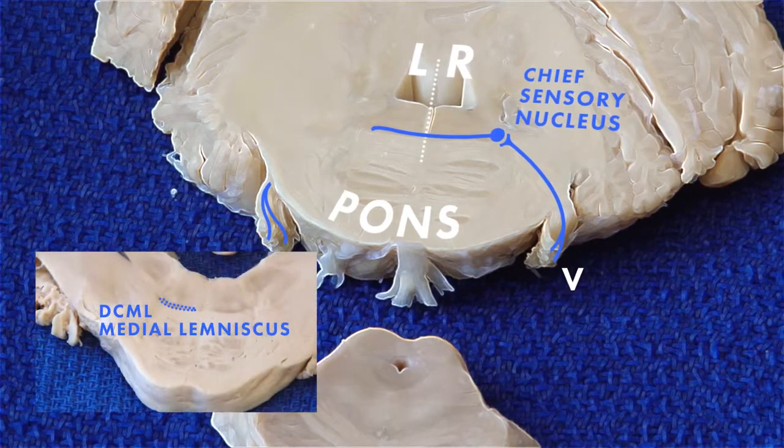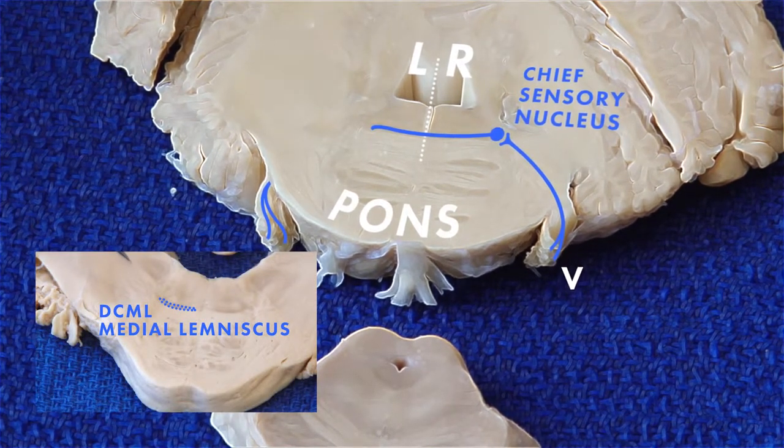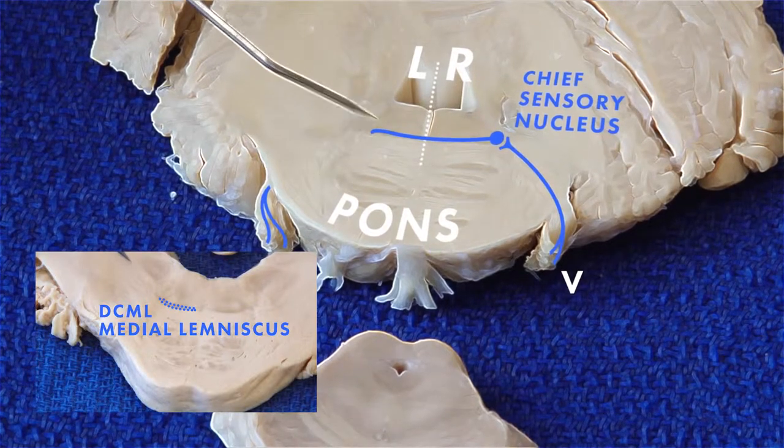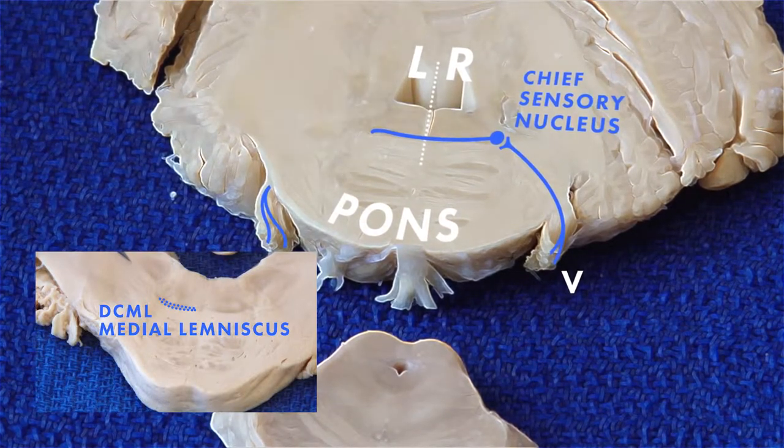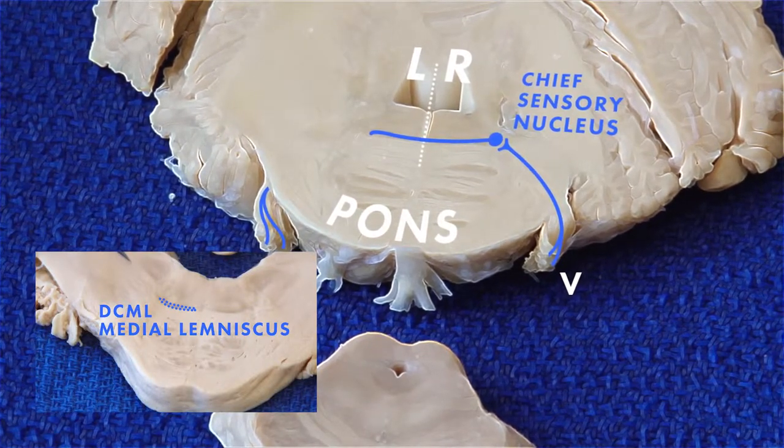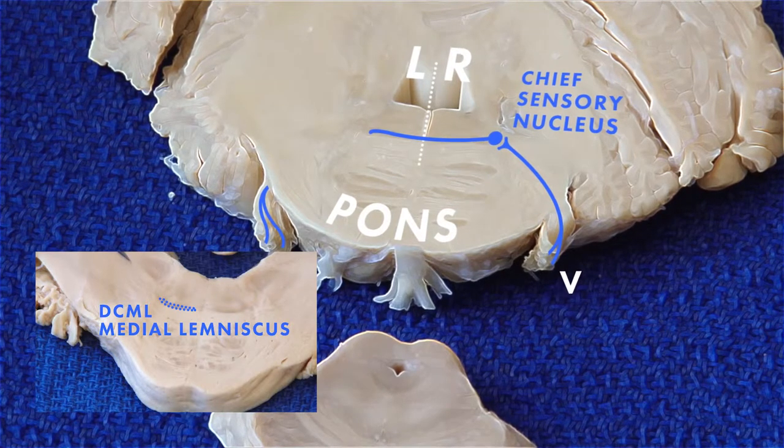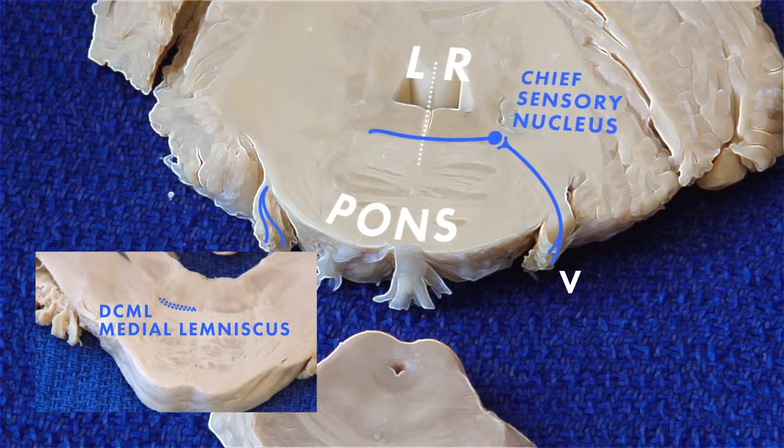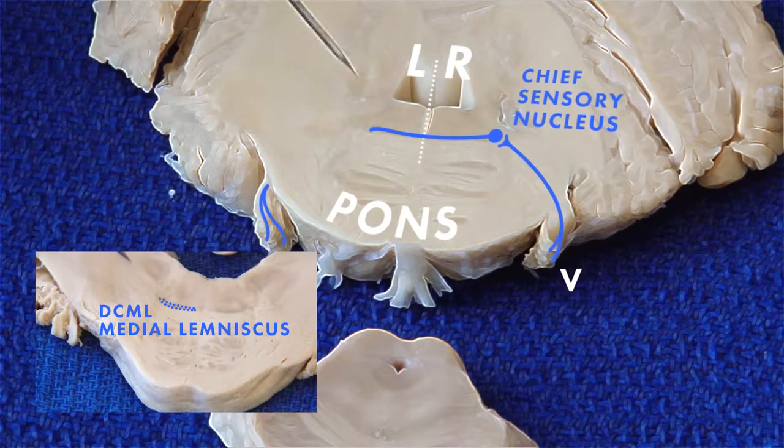So we now have facial sensation located very close to the medial lemniscus that is carrying body sensation for fine touch, joint position, and vibration.